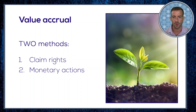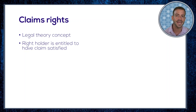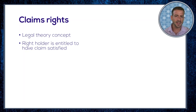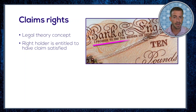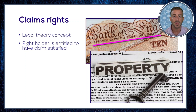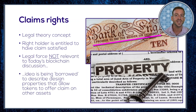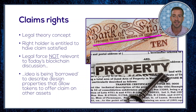When it comes to claims rights, the concept originates in legal theory and typically describes a right holder being entitled to have a specific predefined claim satisfied when certain conditions are met. As rough examples, consider the words printed on Bank of England money that reference the time when this money was honored as a claim on other assets held by the bank, or consider a transfer of title for a property which confirms the new owner's rights to enjoy its benefits. Legal force is not relevant to us here — I'm just borrowing the term to talk about how we design digital tokens to give them a reliable claim to something else.